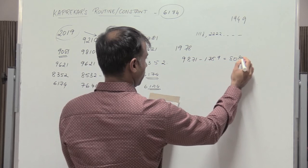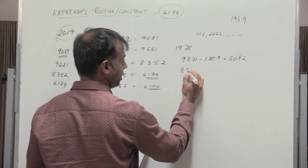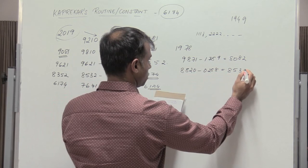Consider 8082. Largest to smallest: 8820 minus 0288. So we get 8532.